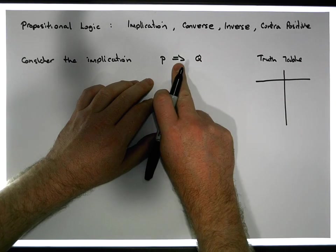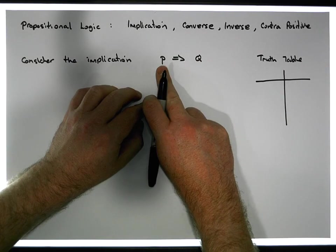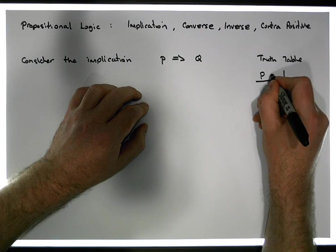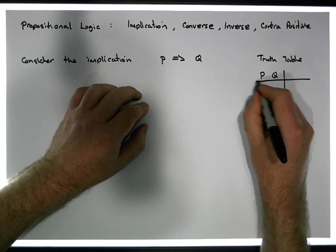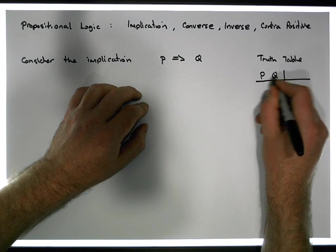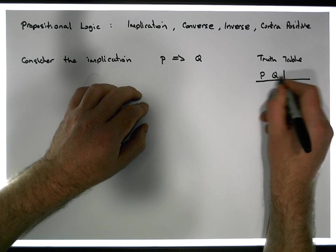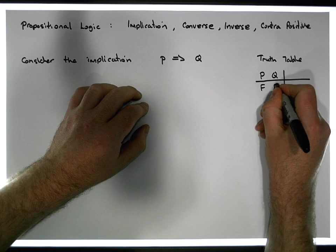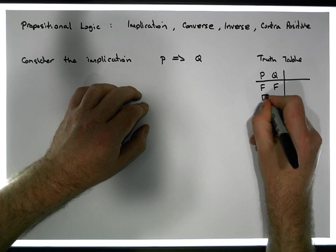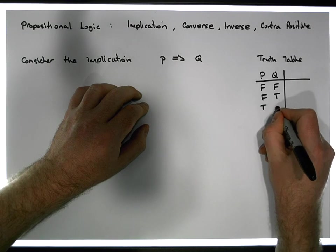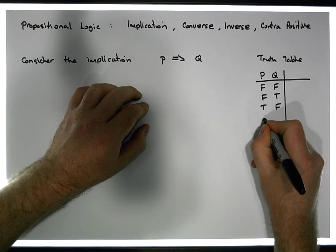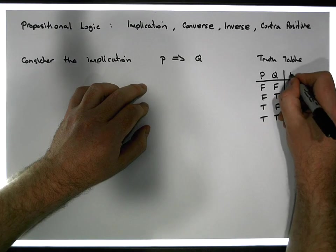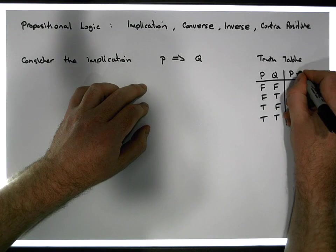The implication takes in a left and right operand, p and q. The possible states that p and q could be in simultaneously are: false-false, false-true, true-false, and true-true. And p implies q — after we perform the operation...